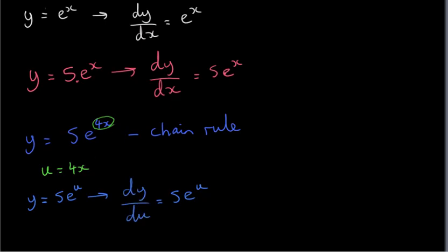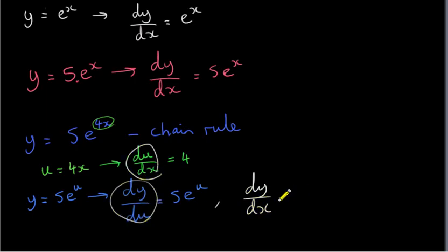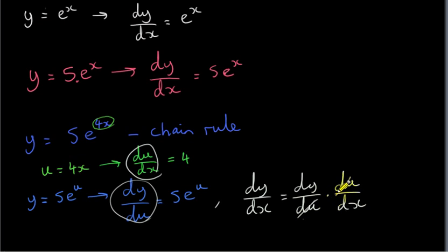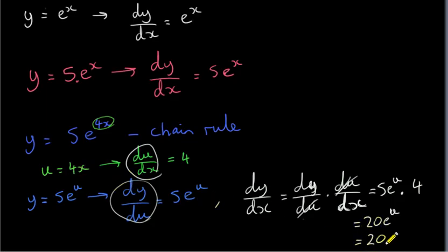Of course, we want dy/dx. To get dy/dx we first have to get du/dx — differentiate our power 4x with respect to x — to give 4. So now at last we can get dy/dx. dy/dx is obtained from these two derivatives: it's dy/du multiplied by du/dx. The du's cancel; these two derivatives behave like fractions. dy/du is 5 times e to the power of u, and du/dx is 4. So this gives us 20 times e to the power of u. We then put back in for u: u is 4x, giving us 20 times e to the power of 4x.